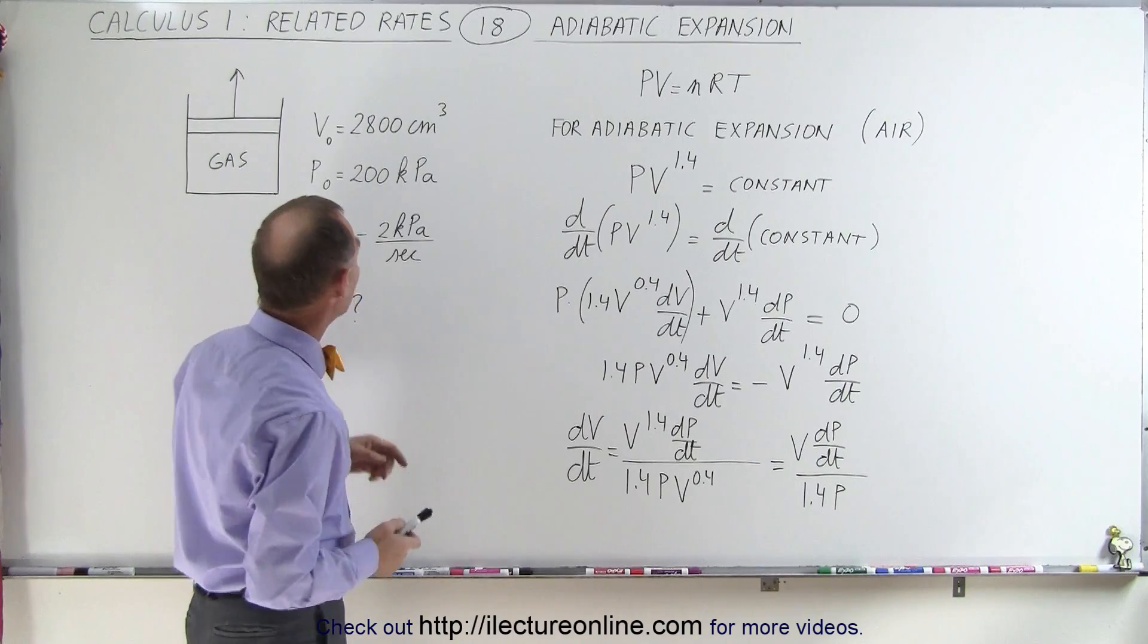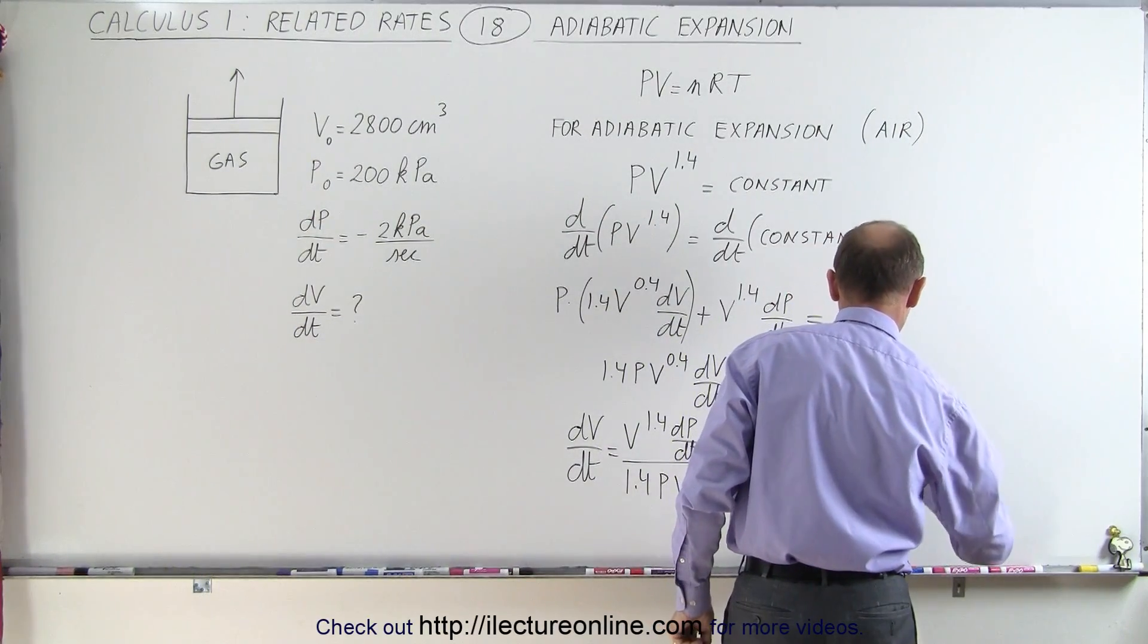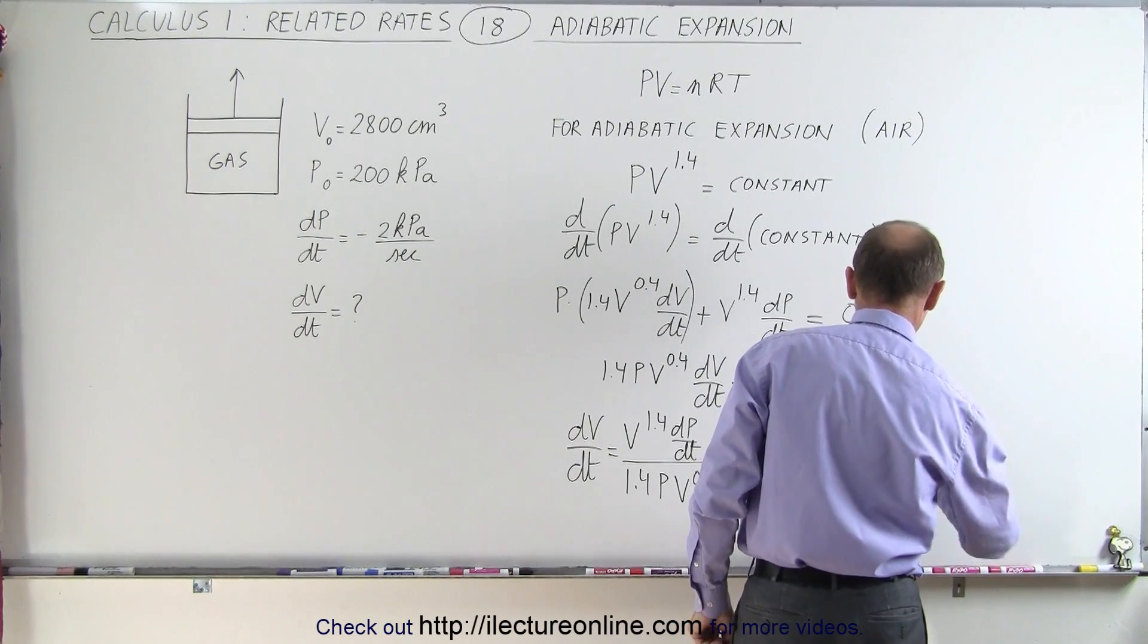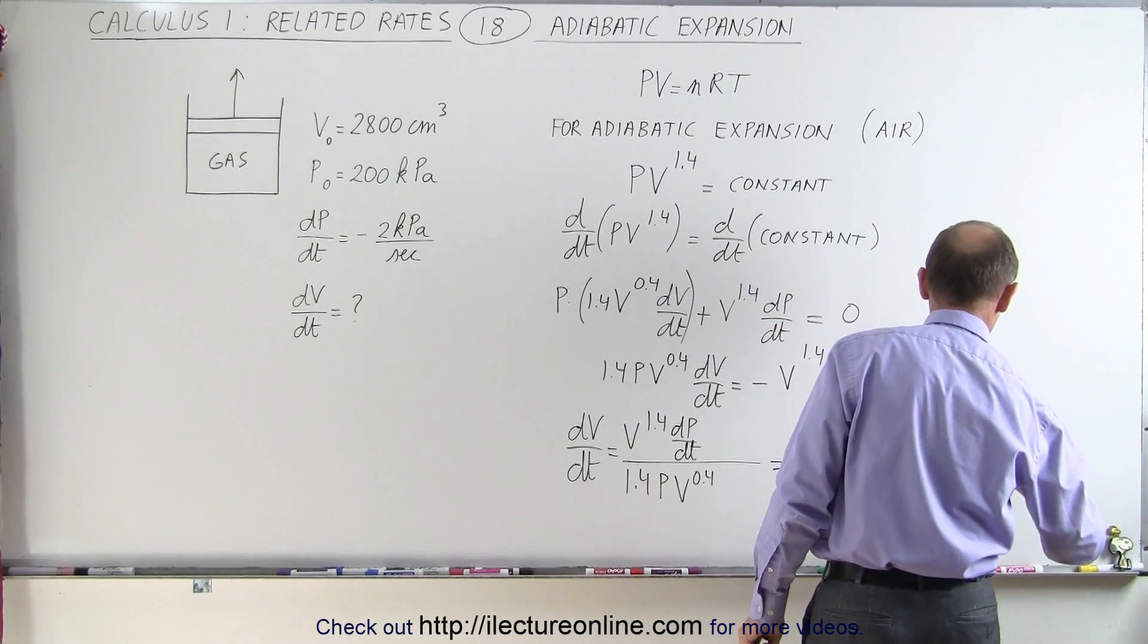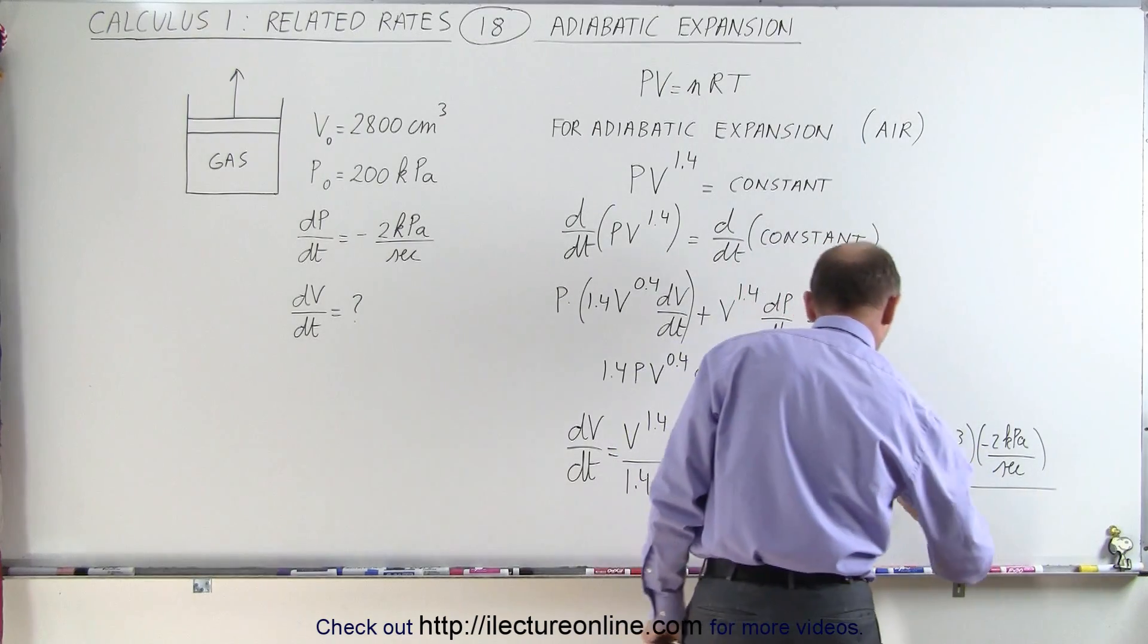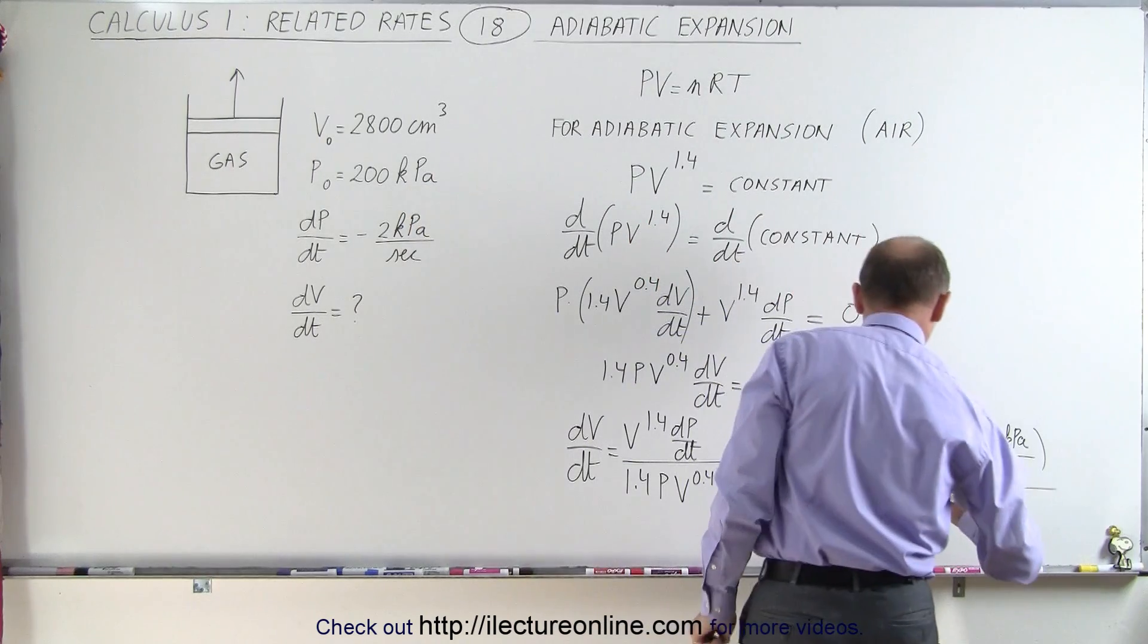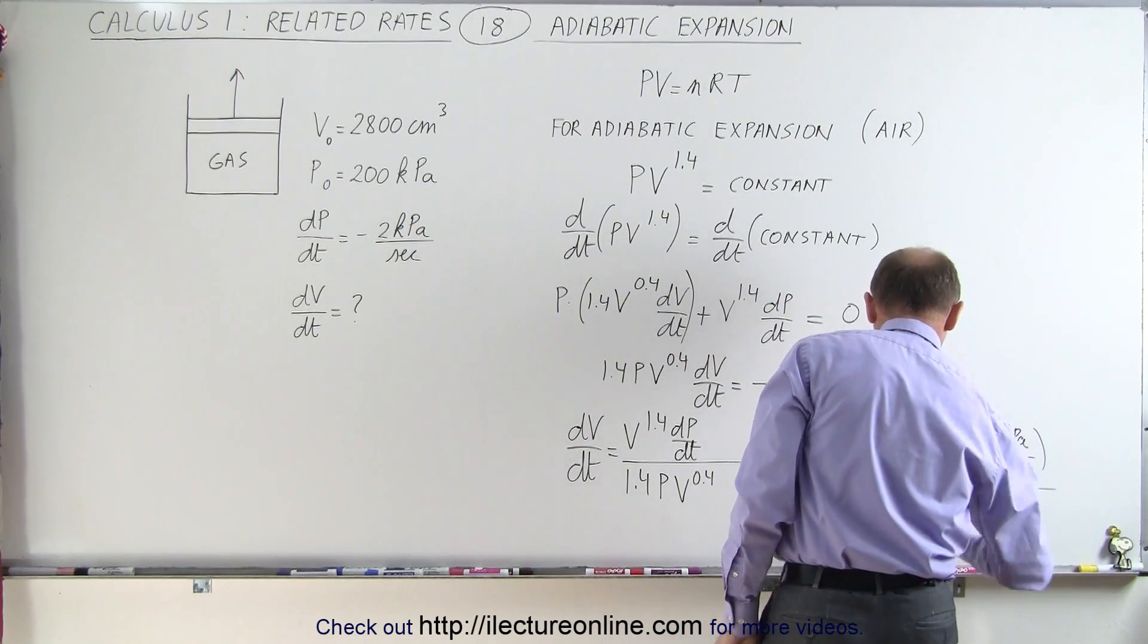Now we're ready to plug in what we know. The volume started at 2800 cubic centimeters. The dP/dt is a negative 2 kPa per second. And 1.4 times pressure, and the initial pressure is 200 kPa, so 1.4 times that.